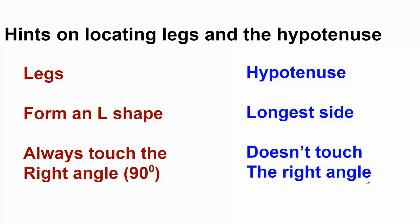And remember that the hypotenuse doesn't touch the right angle. It's across from it. So the hypotenuse is the one out of the three sides that doesn't come in contact with the right angle. So there's the basics on legs and hypotenuse.